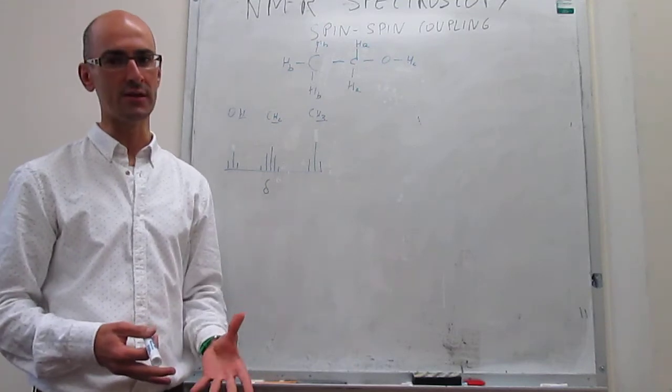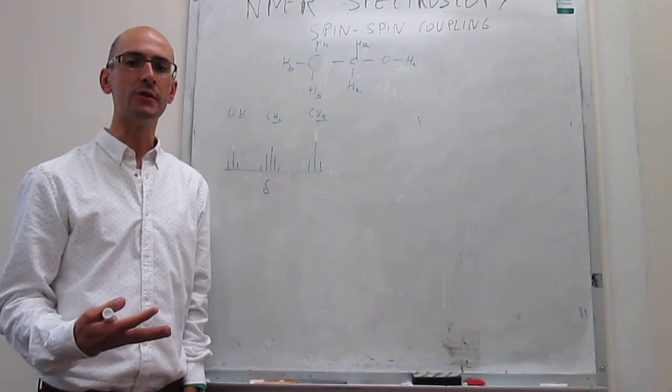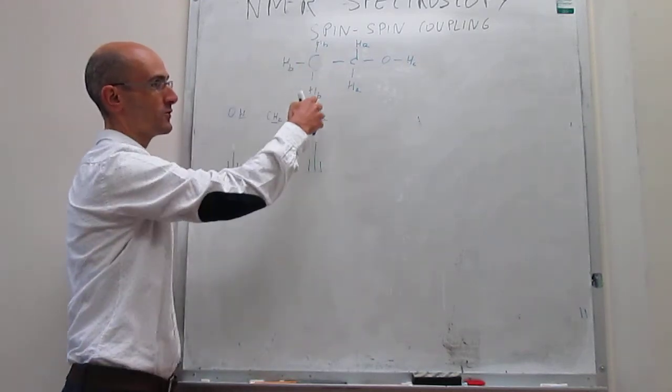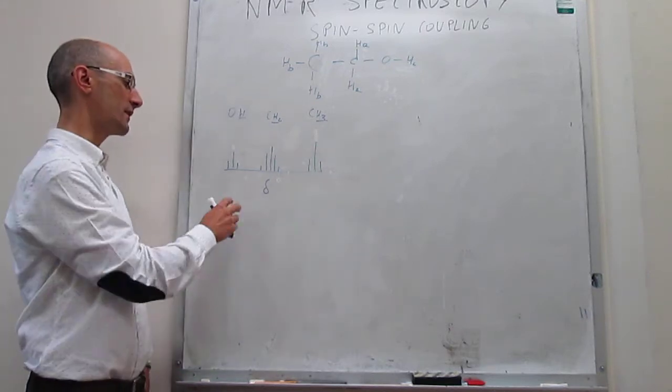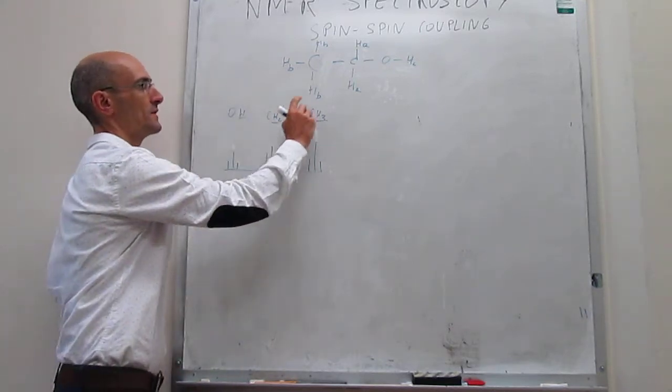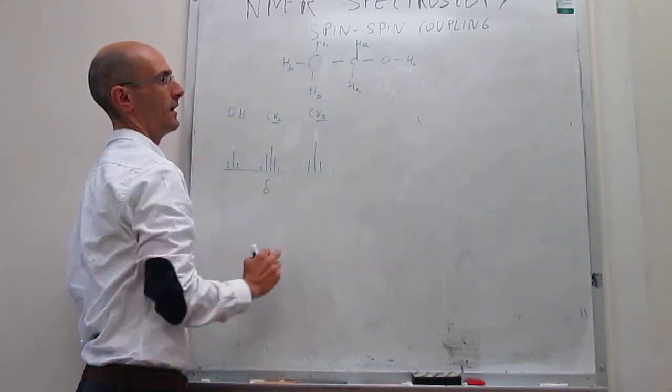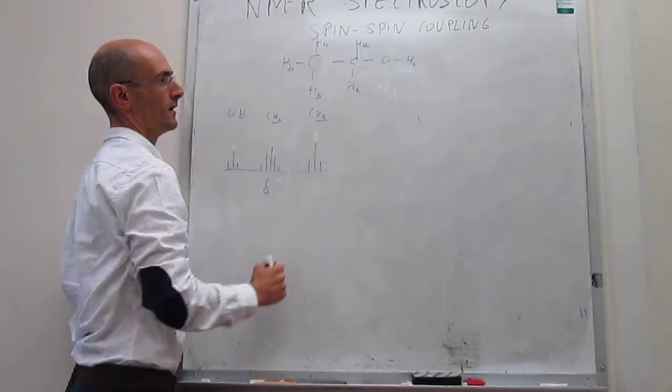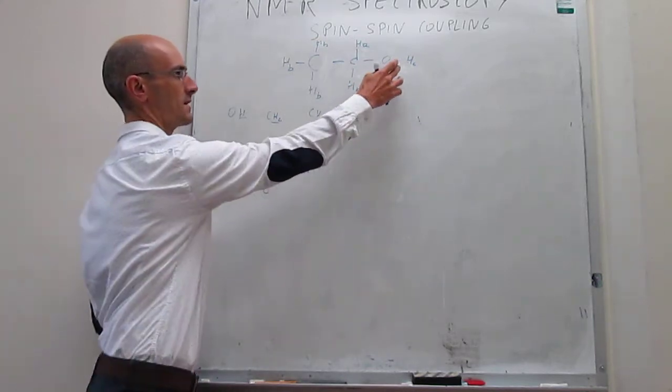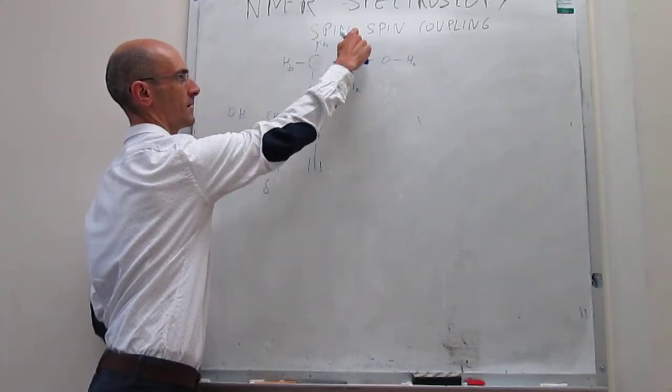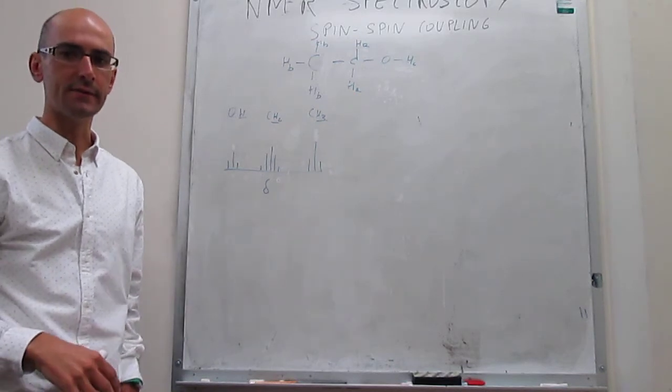when the ethanol is neat, so pure ethanol. What we've seen is that under the approximation that the coupling constants between protons are identical throughout the molecule, the spectrum should look like a triplet for this proton, a triplet for those protons, and then a quintet for these methylene protons. We know that in reality it's a little bit more complicated because those coupling constants are not exactly identical, but that's something we have already discussed.